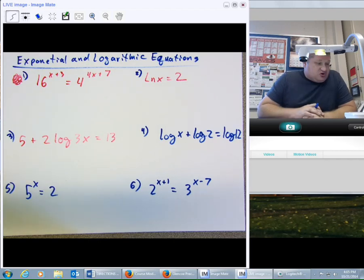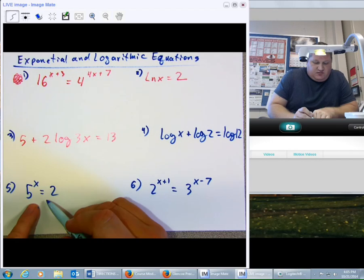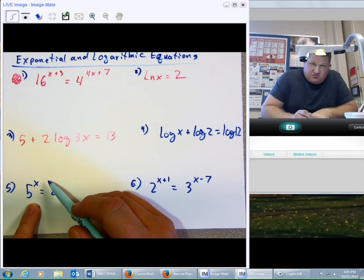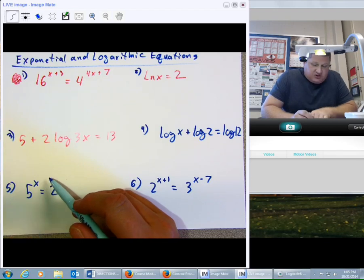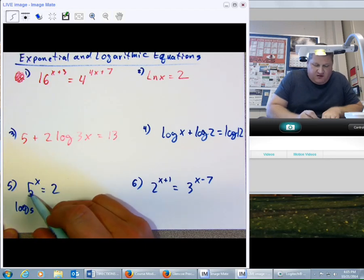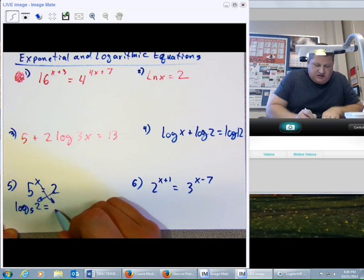Where I want to start is actually down here with number 5. In number 5, remember the whole reason we began this process was because we have an x in the exponent. With that, we can't solve this problem. I can't take the x through. But what I can do is I can rewrite it and say log base 5 of 2 equals x.